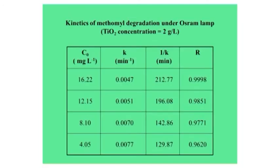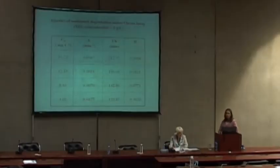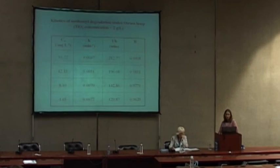This table shows the influence of initial methomyl concentration on the degradation rate in the presence of optimal catalyst concentration. Our results show that an increase in initial methomyl concentration leads to a decrease in the degradation rate. According to many researchers, pseudo-first-order kinetic rate and half-time of reaction can be calculated based on the Langmuir–Hinshelwood mechanism.